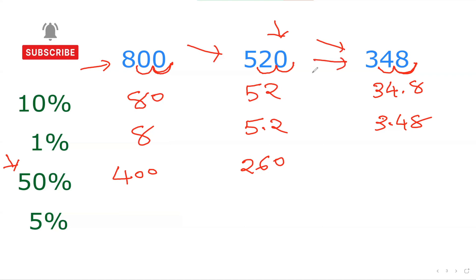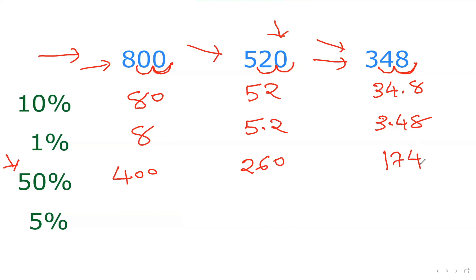For 348, to find 50 percent I can think of 350, which halves to 175. Since 348 is 2 less, I subtract 1, giving 174. Alternatively, split into 300 and 48: half of 300 is 150, half of 48 is 24, and 150 plus 24 also gives 174. There are many ways — the more creative you become, the faster you can do it.